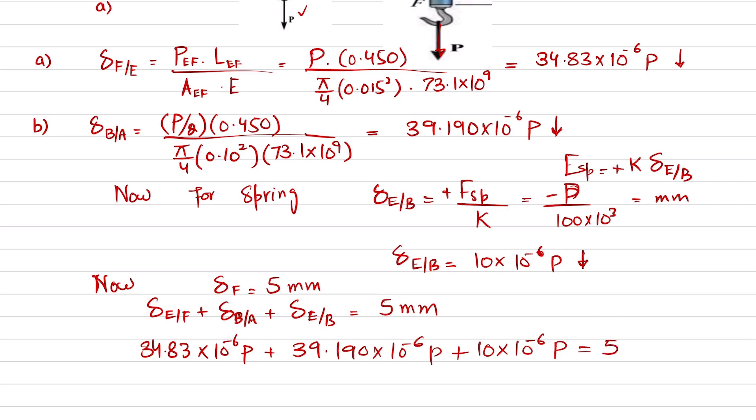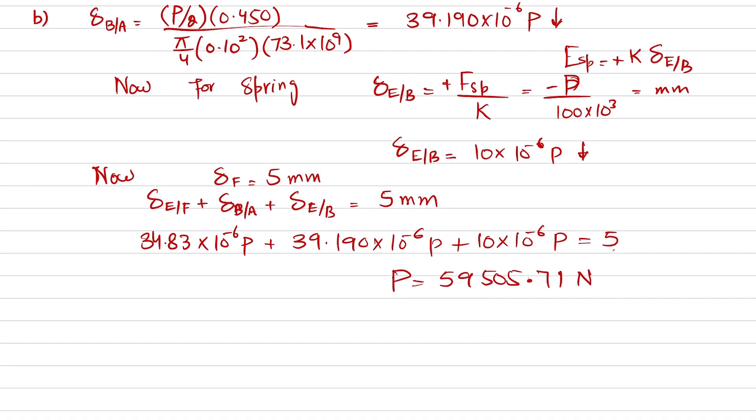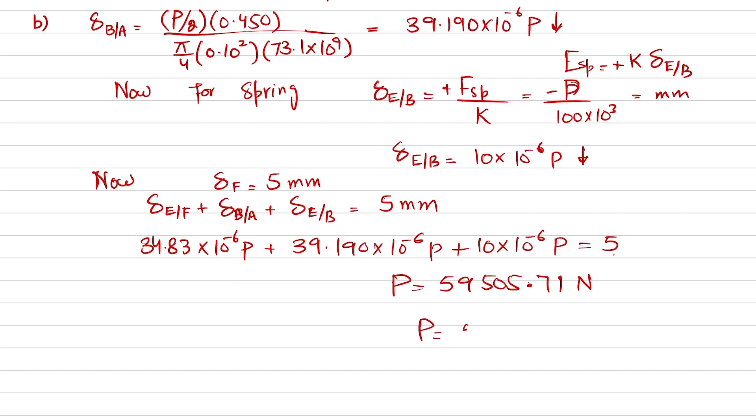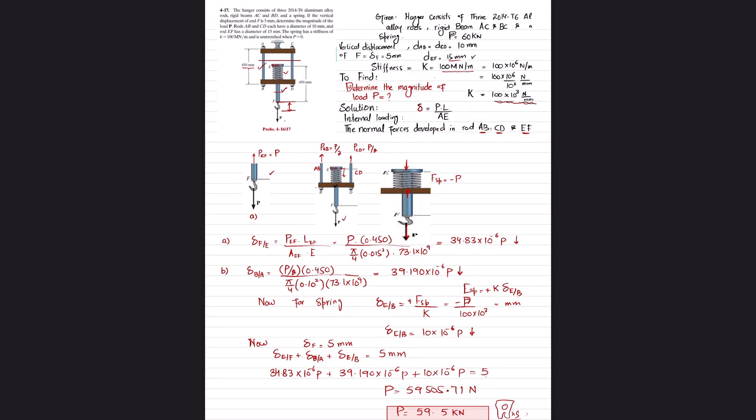If you take P as common and sum all this and divide 5 by that value, you will get P is equal to 59,505.71 newtons, or P will be equal to 59.5 kilonewtons. So this is the value of P that can be applied to this end so that point F moves 5 millimeters downward.